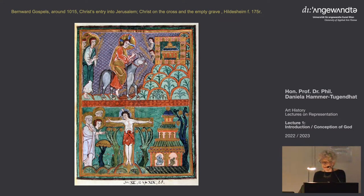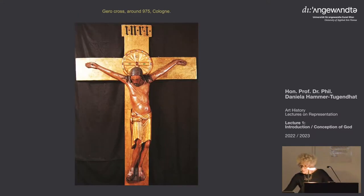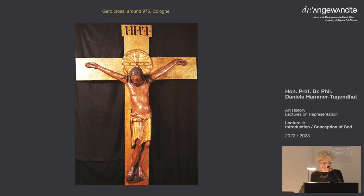You see other examples from the Carolingian period: Christ standing on the cross, open eyes, not hanging — he is the one who overcomes this. Or in this miniature, Christ even looks at the people coming. And the first example we know where this changed is the so-called Gero Cross, dated about 975, late 10th century. An iconographic change signifies a semantic shift — a change in the meaning to be conveyed.